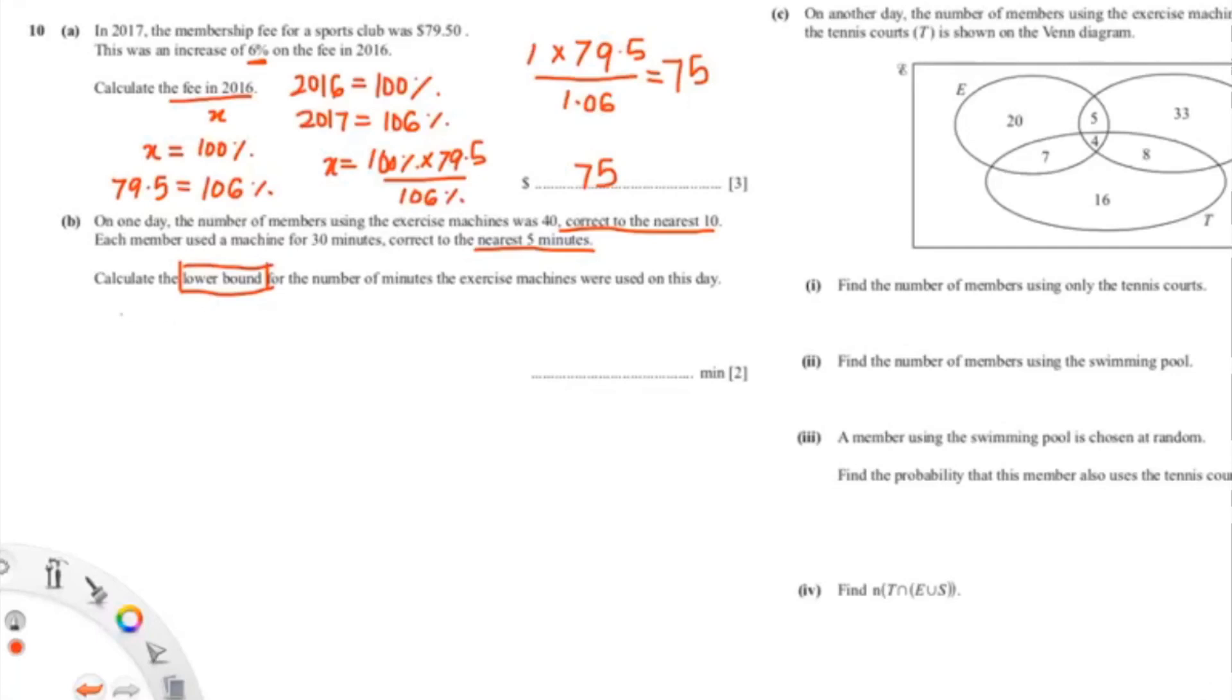Now they're asking us to calculate the lower bound. The lower bound of 40, correct to the nearest 10, would be 35.